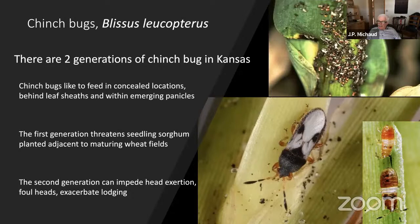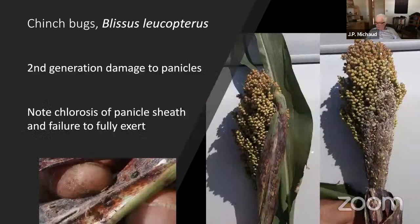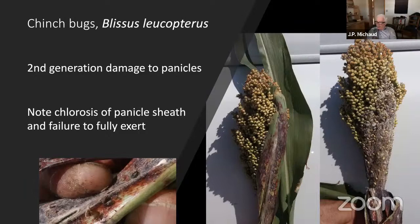First generation damage is caused by immature bugs that move out of ripening wheat fields where they began their development, and they march into adjacent sorghum fields where they can progressively kill row after row of seedling sorghum. The second generation damage occurs when first generation adults lay their eggs in sorghum panicles around boot stage. They can hide behind the panicle sheath and produce a lot of red chlorotic damage to the stem supporting the panicle. You'll see red patches on the stems below the panicles — those were caused by chinch bugs feeding in the tight spaces before the panicle emerged.